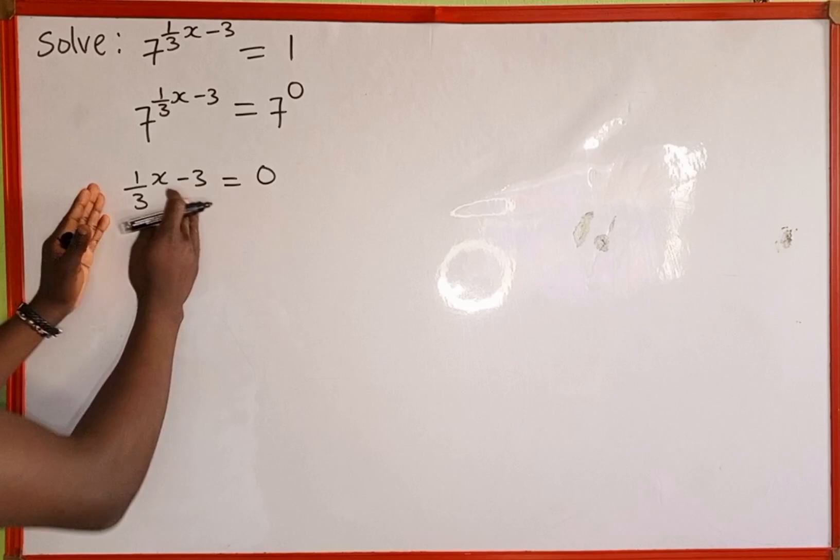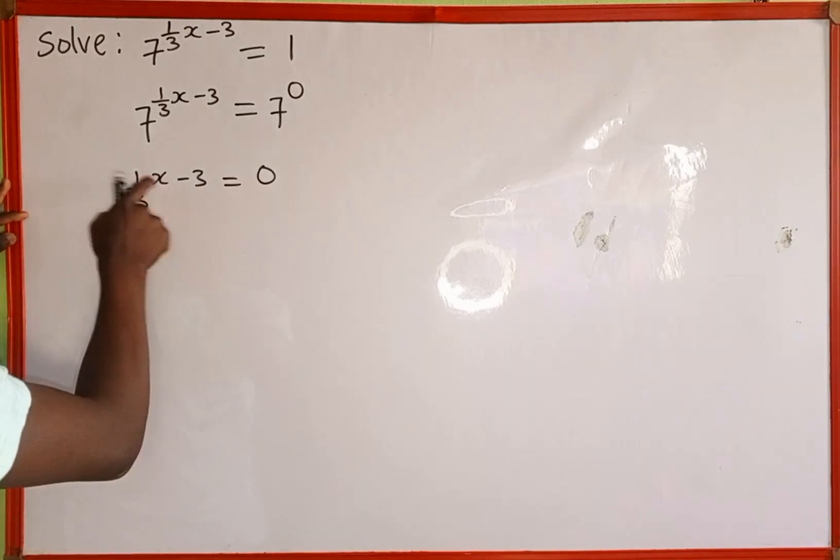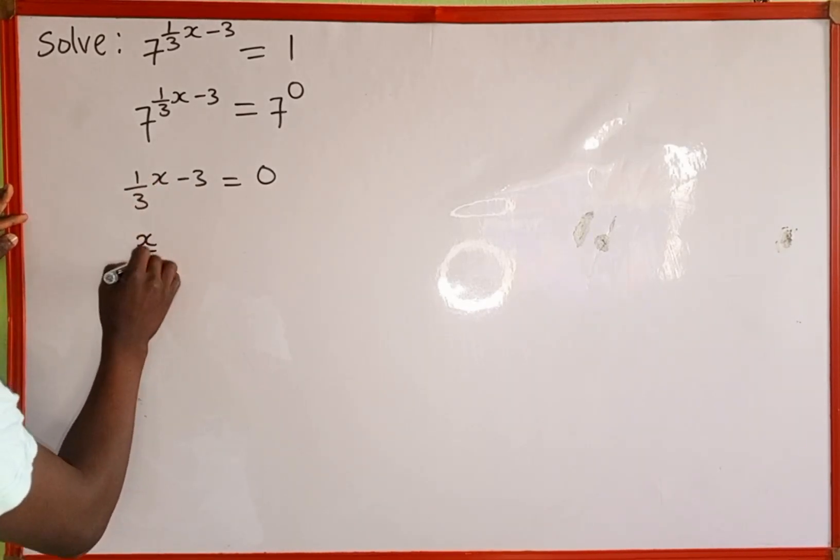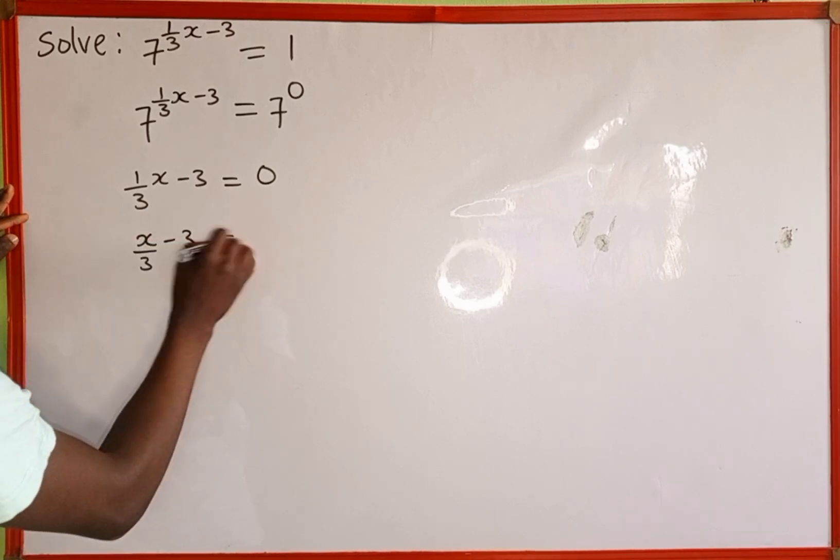Now we're going to simplify the left hand side first. 1 multiplied by x is going to give us x, then divided by 3, minus 3 equals 0.